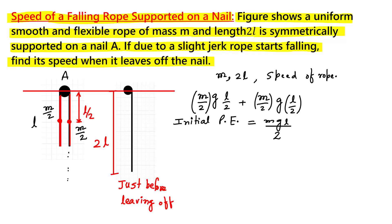Now let us write the final potential energy. Just before leaving the nail, all the rope is on one side with total length 2L, so the center of mass is located at a distance of L below the nail. Therefore, the final potential energy is MgL.